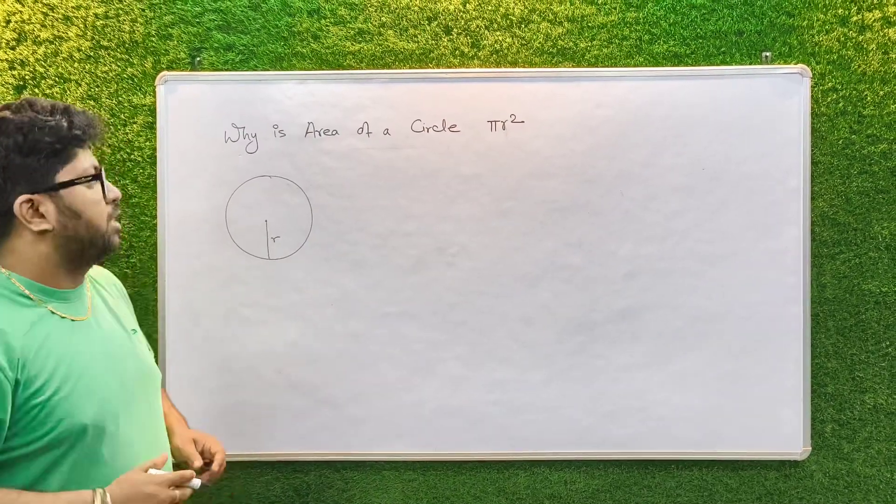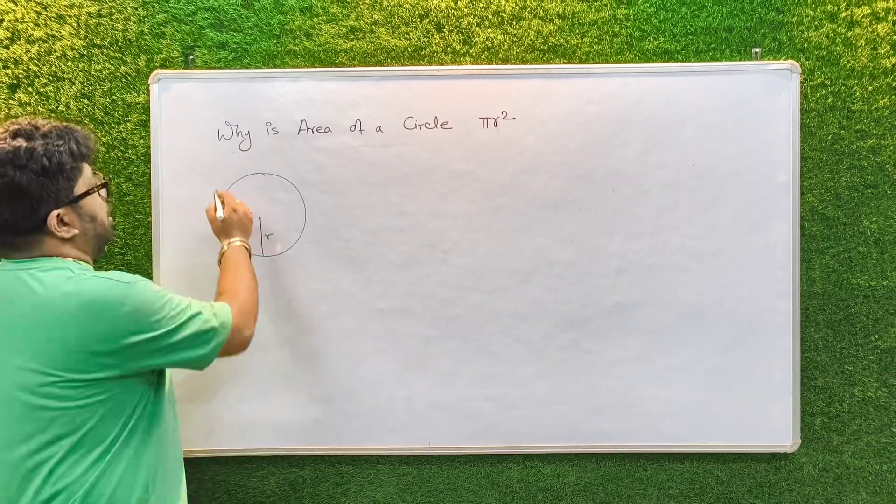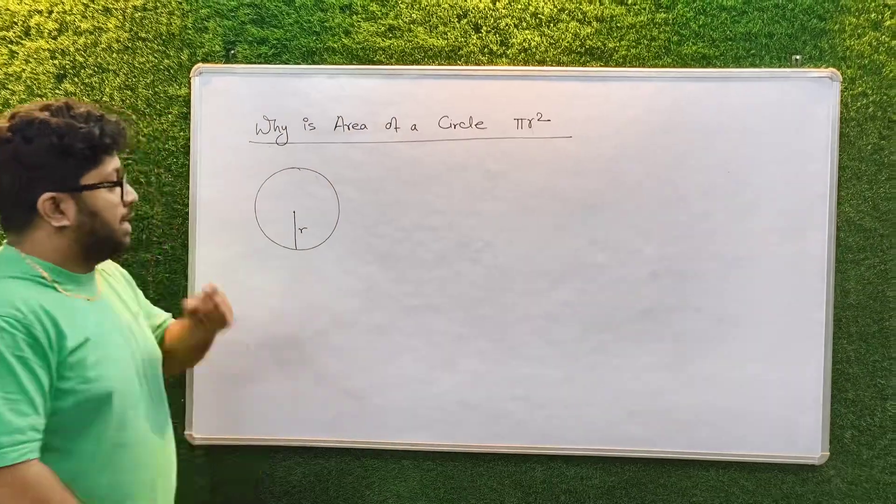Hello friends, welcome to my channel Vidyarthi. Today we are going to learn why the area of a circle is pi r square.